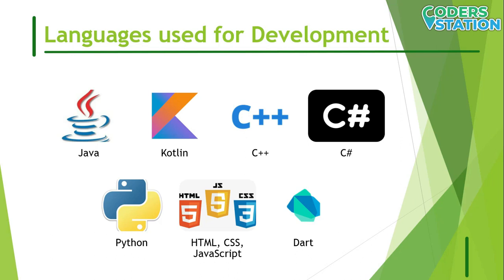Python can be used for Android app development even though Android doesn't natively support Python development. This can be done using various tools that convert Python apps into Android packages that can run on Android devices. Android apps can also be created using HTML, CSS, and JavaScript via the Adobe PhoneGap framework powered by Apache Cordova. The PhoneGap framework allows web development skills to create hybrid apps shown through WebView but packaged like an app.